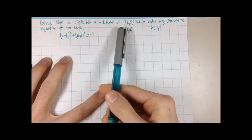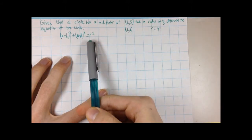So if we look at the problem, (2,5) is our h and k, the radius is 4, that's r.